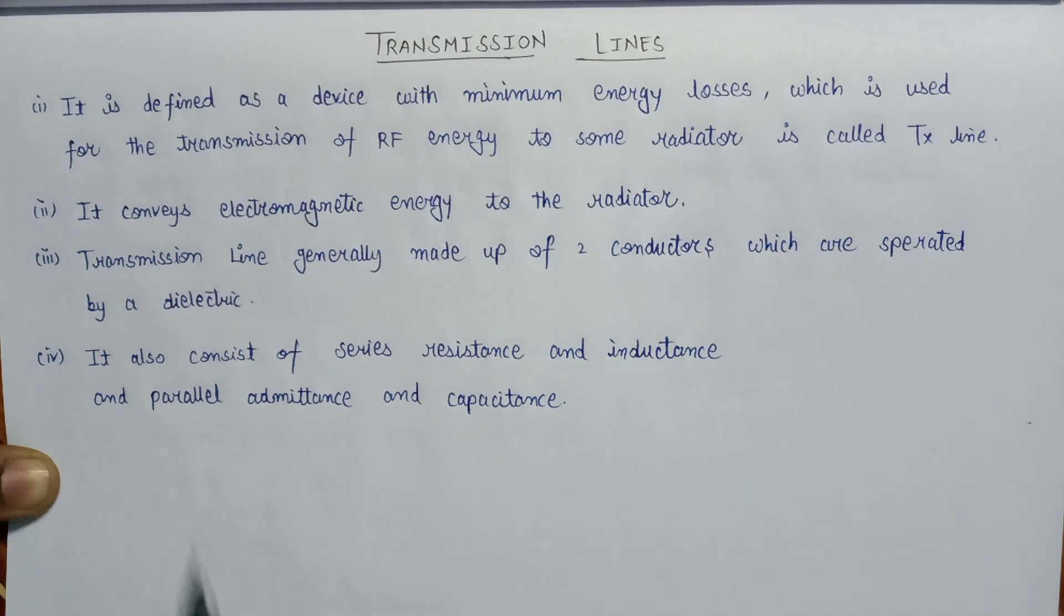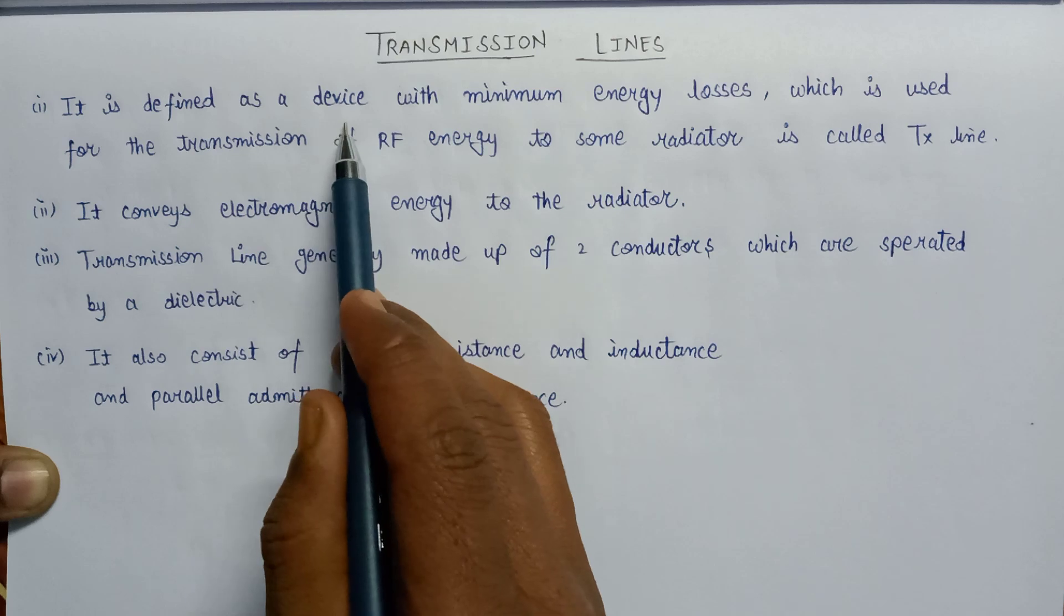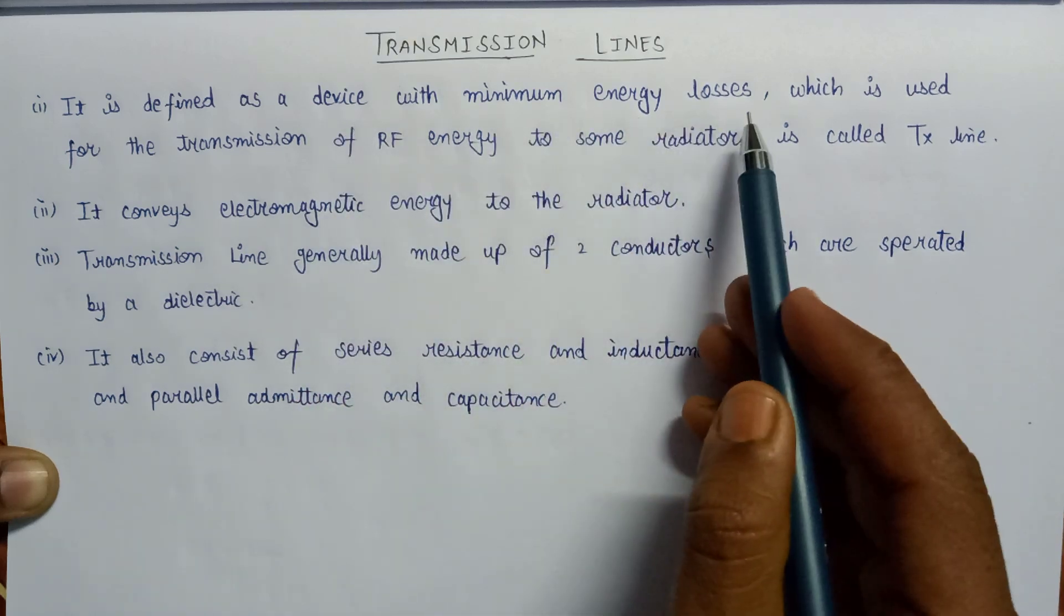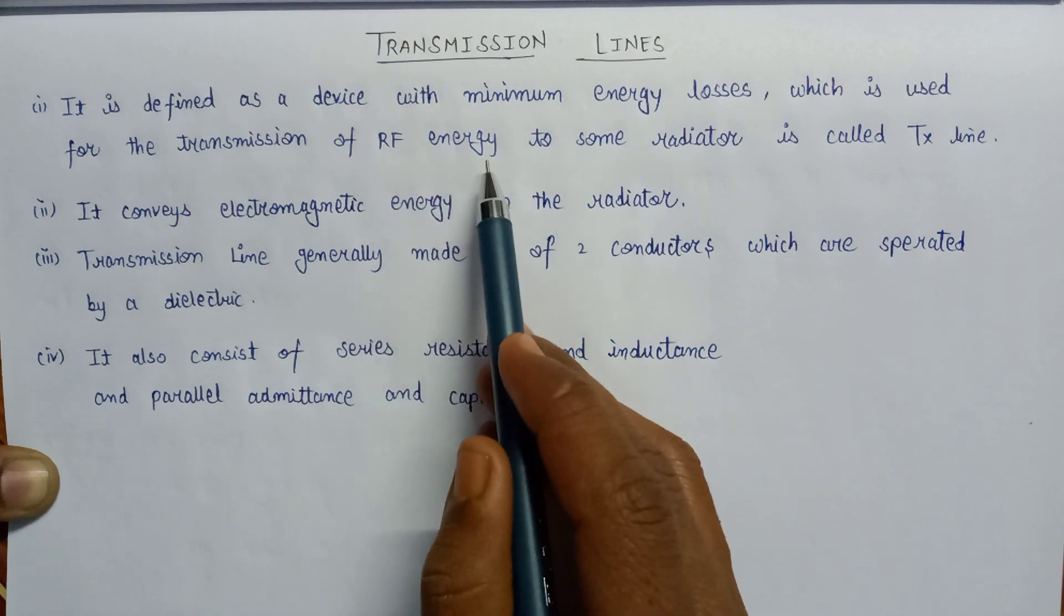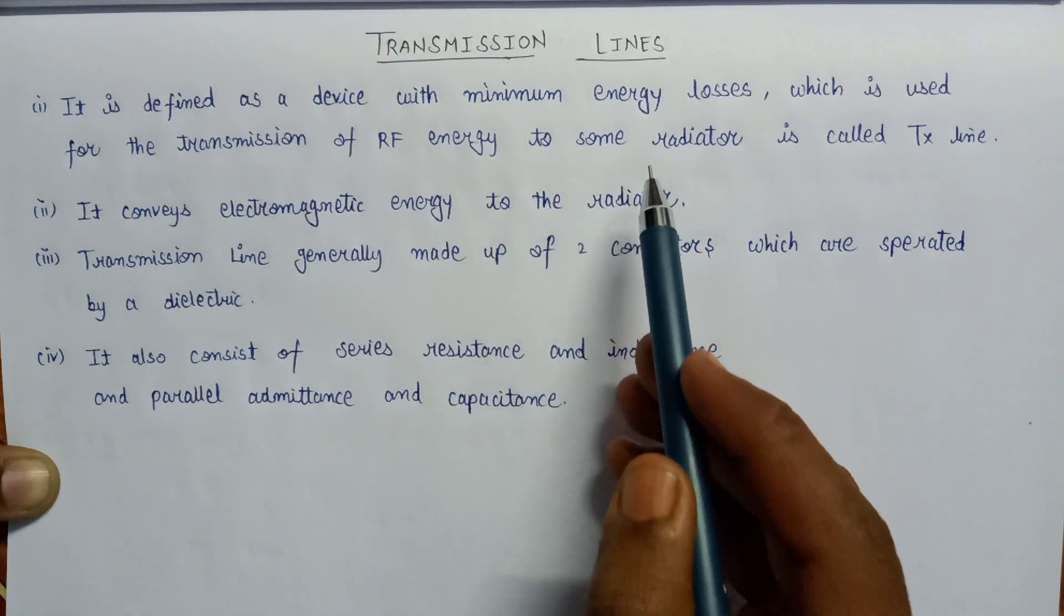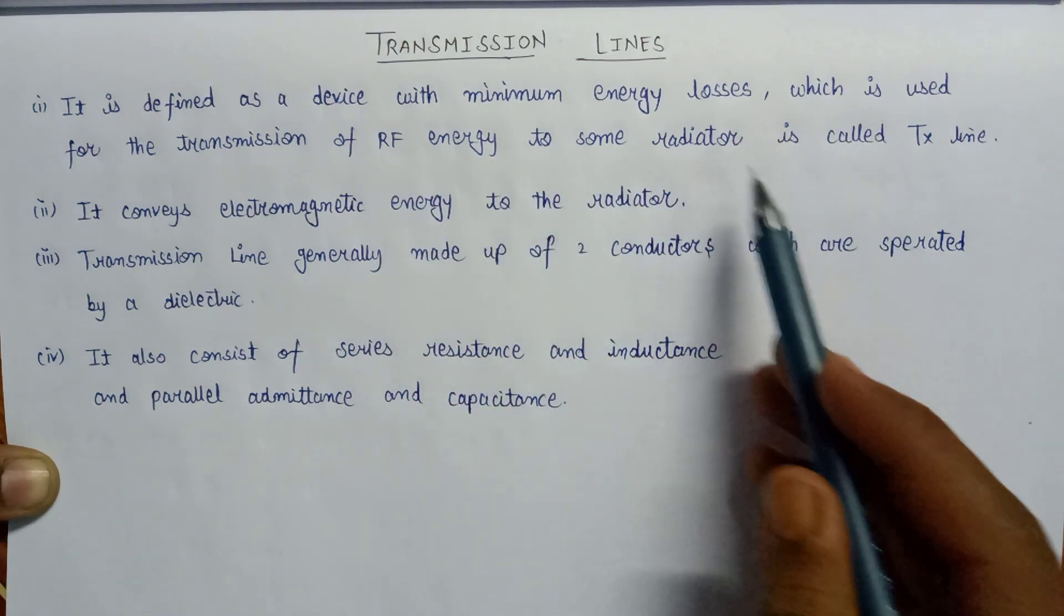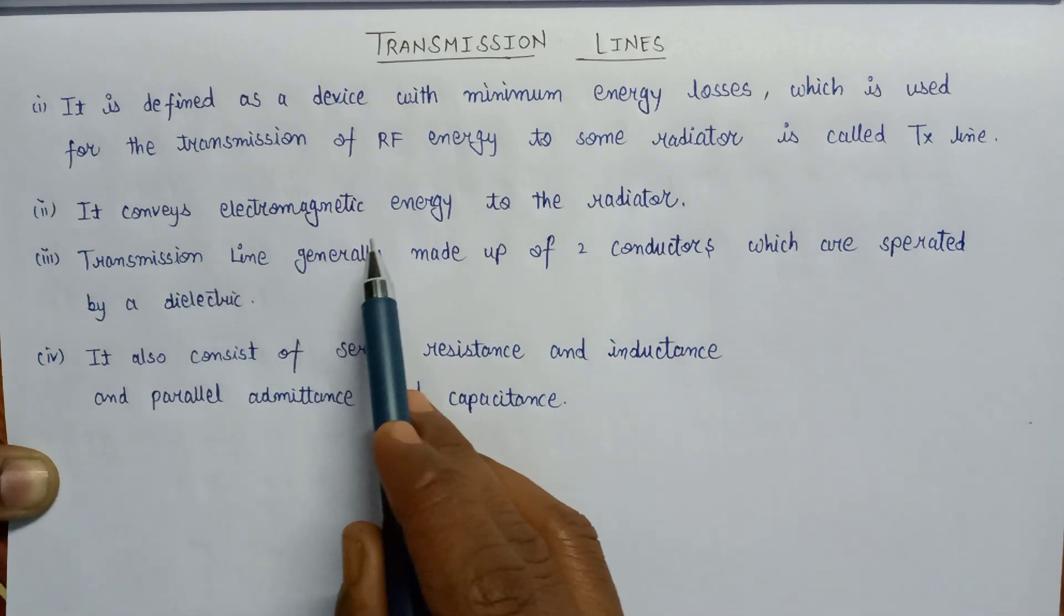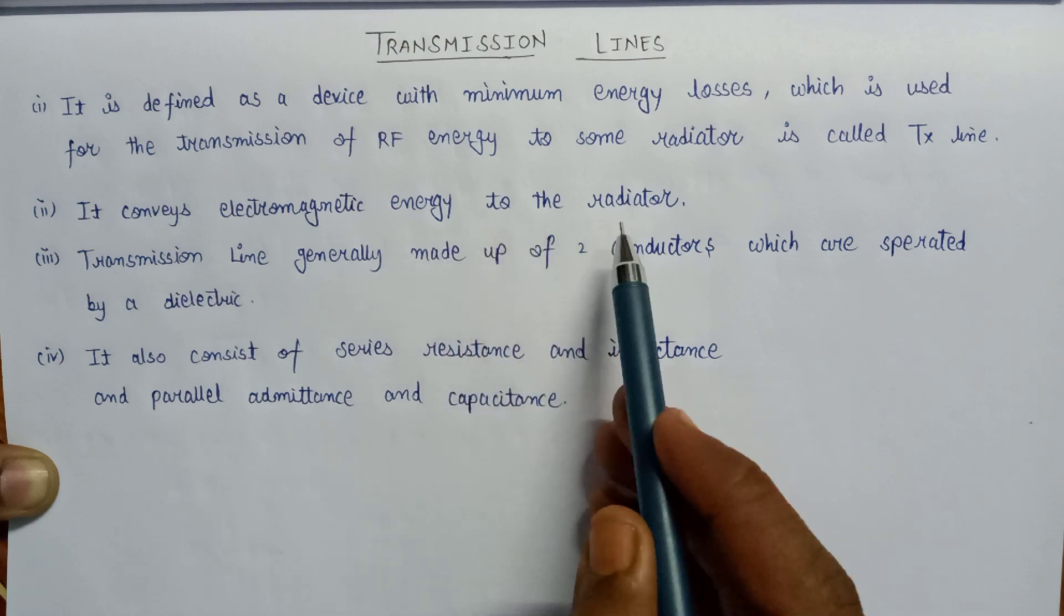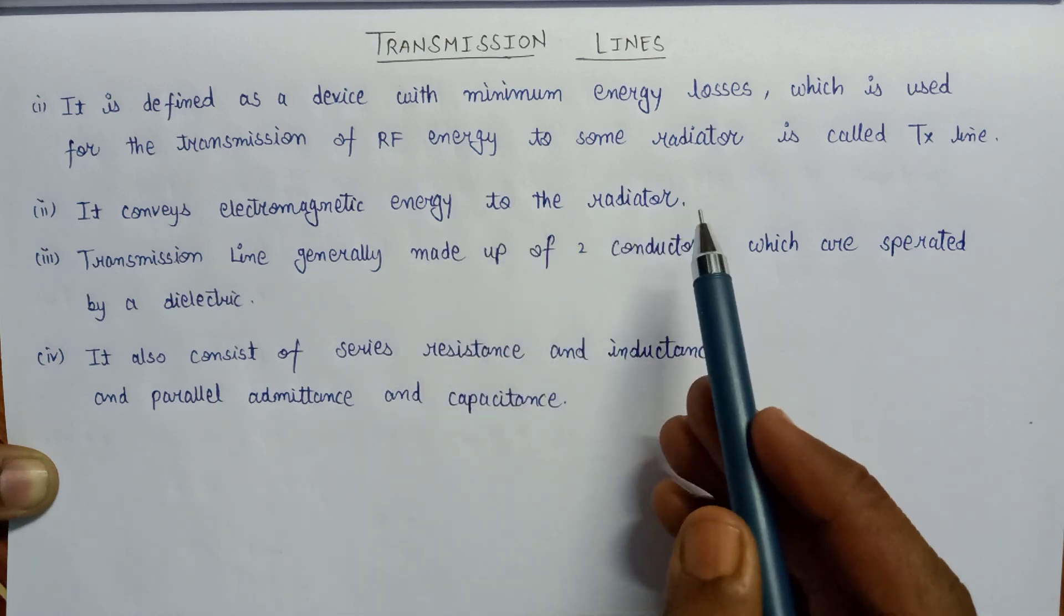A transmission line is defined as a device with minimum energy losses, which is used for the transmission of RF energy to some radiator. A transmission line conveys electromagnetic energy to the radiator for its transmission.